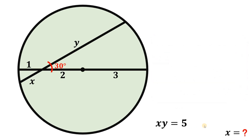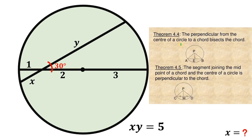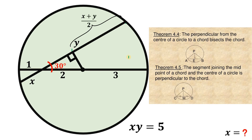Let's set aside this result and use another theorem. That theorem states that the perpendicular from the center of the circle to a chord bisects the chord. So from the center of the circle, let's draw a perpendicular segment to the chord that bisects it. In short, this segment right over here is half of X plus Y, or simply (X plus Y) over 2.